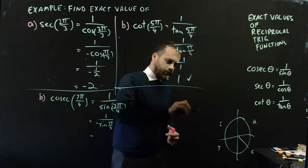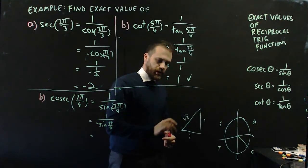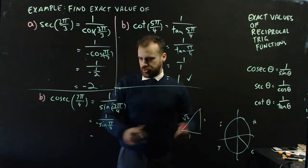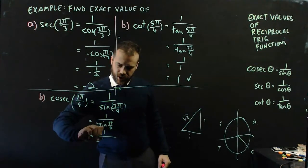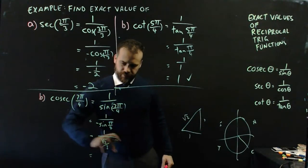Now, π/4, 1, 1, √2. It's going to be √2/2. So, 1/negative √2/2.